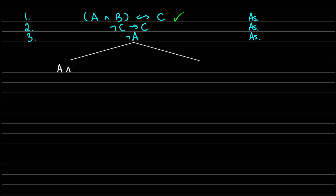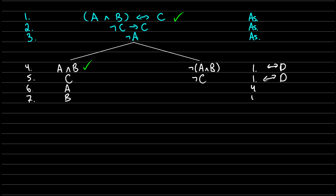The biconditional gives us two branching paths. On the left, we have a case where A and B is true and C is true — that'll be lines four and five. On the right, we have a case where A and B is false, so not (A and B) is true and not C is true. Both come from line one via biconditional decomposition. Then we decompose A and B on the left branch — from line four via AND decomposition — giving us A true and B true on lines six and seven. We can now close the left branch because we have A and not A, which is a contradiction.